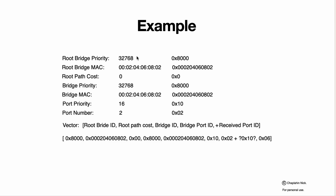By default, priorities at the bridge level are 32,768 — half of the maximum possible value of 65,535 — translated into hexadecimal. MAC addresses are hexadecimal values by themselves. Path costs are 0 by default because each device by default treats itself as root. Port numbers are straightforward. Port priority will be present, and for some vendors the received port ID will not have a separate priority — it won't be calculated — but the port number will definitely be available.